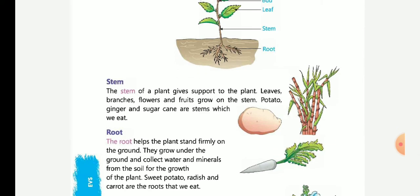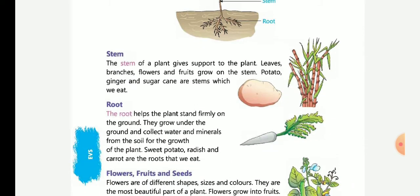The stem of a plant gives support to the plant. Leaves, branches, flowers and fruits grow on the stem. Potato, ginger and sugarcane are stems which we eat.